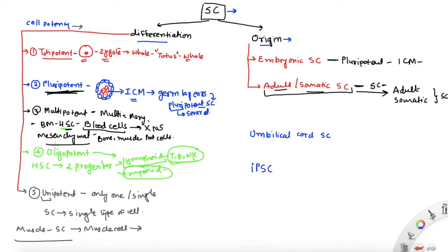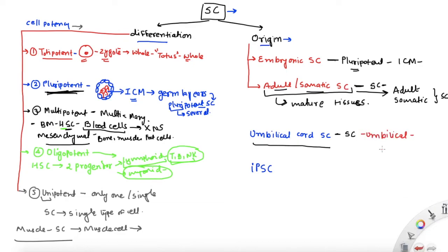So multipotent, oligopotent, and unipotent stem cells are all adult or somatic stem cells, while embryonic stem cells are the pluripotent stem cells from the inner cell mass. You may also have heard about umbilical cord stem cells — these are stem cells derived from the umbilical cord after birth. The umbilical cord and placenta are discarded at birth, but they are a rich source of multipotent stem cells, making umbilical cord stem cells a type of multipotent stem cell.